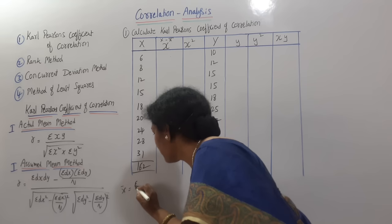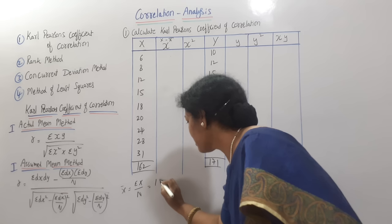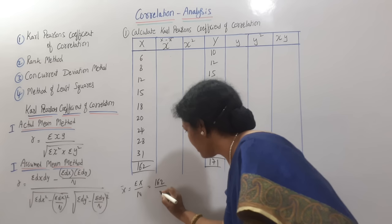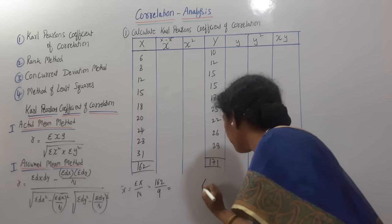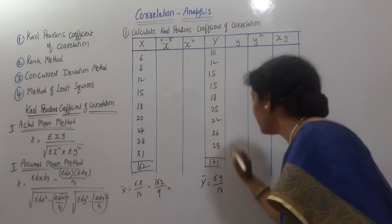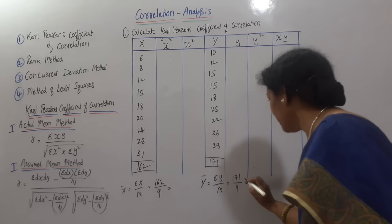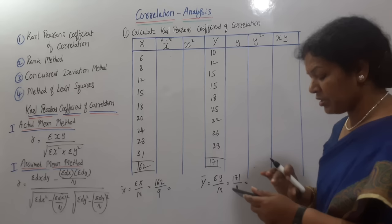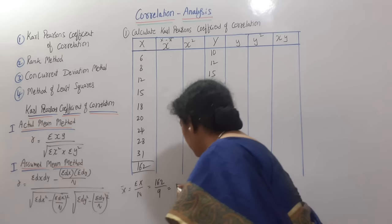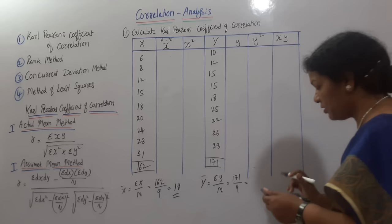Sigma x — the total — is 162, divided by the number of observations, which is 9. So x̄ equals 18. In the same way, y̅ equals sigma y divided by n. Sigma y total is 171, divided by 9, which gives y̅ equals 19.